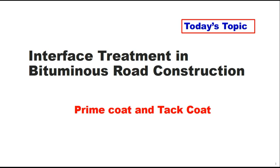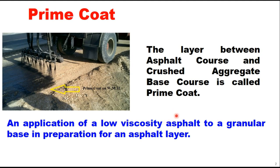Today we are discussing interface treatment in bituminous road construction. Interface treatment basically means prime coat and tack coat. Prime coat is a layer between the asphalt course and crushed aggregate base course — it is an application of a low viscosity asphalt to a granular base in preparation for an asphalt layer. Untreated base is provided with prime coat, and above that we provide tack coat before laying the bituminous layer.